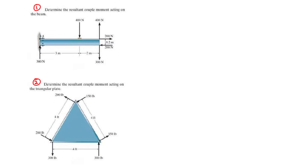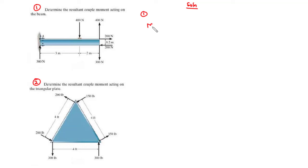We are going to take the first two questions, determining the resultant couple moment acting on: one, the beam, and two, the triangular plate. For question one, we have three couples on the beam. To find the resultant couple moment, we define clockwise moment as positive and anticlockwise moment as negative.